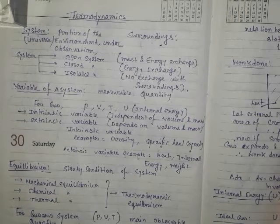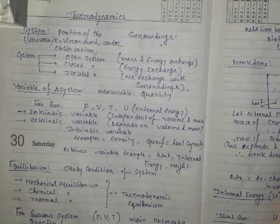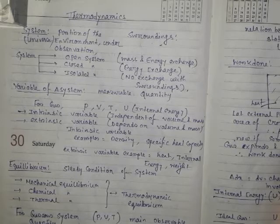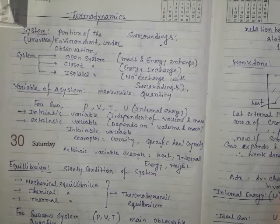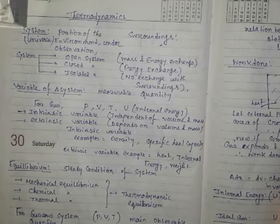A closed system is one where mass exchange is not permissible, but energy exchange is permissible. For example, boiling water in a closed container — vapor is not coming out, so mass exchange is restricted, but some amount of energy is continuously radiating into the environment.